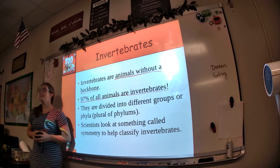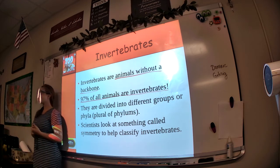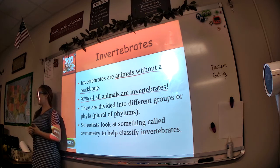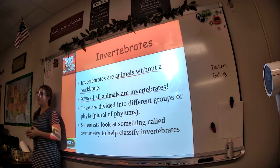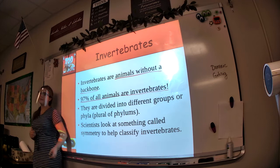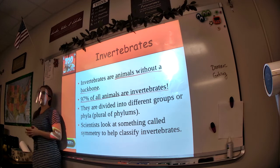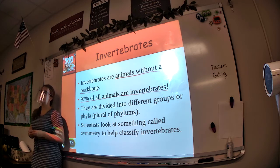Then underneath that, it says scientists look at blank to classify them. The answer is symmetry. Scientists look at something called symmetry to group the animals into groups.